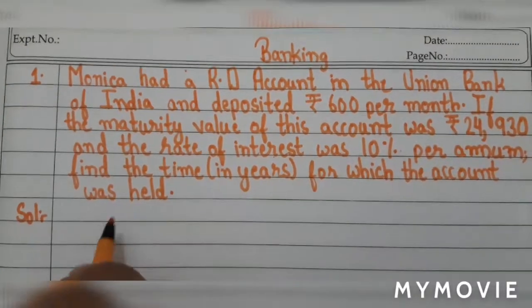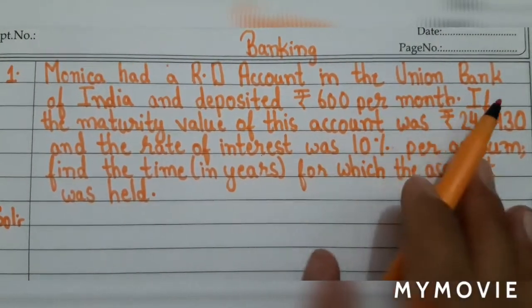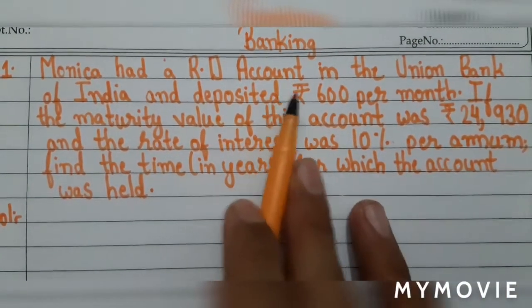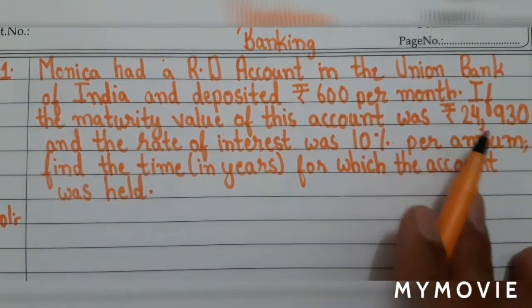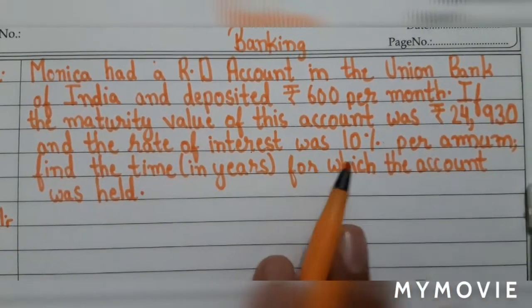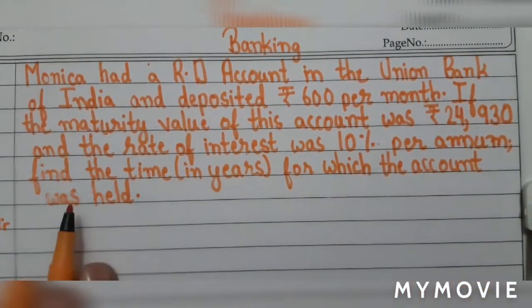Hello friends, welcome to our channel. I hope you are all fine. This is our third video on banking. In this video I am going to explain how to find the time period. Our first question is: Monica had a recurring deposit account in the Union Bank of India and deposited rupees 600 per month. The maturity value of this account was 24930 and the rate of interest was 10% per annum. Find the time in years for which the account was held.